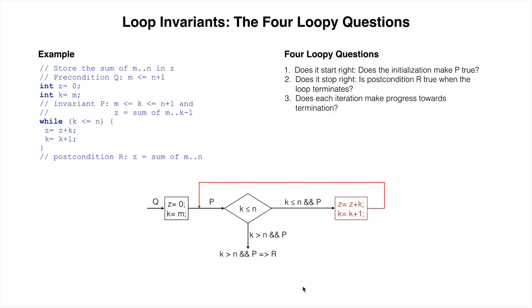The third loopy question is: does each iteration make progress towards termination? The repetend must do something to get closer to making the loop condition false.